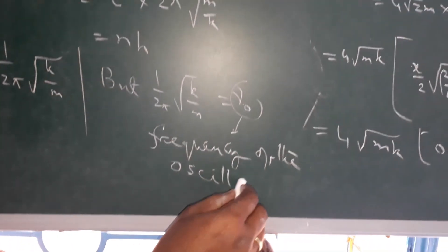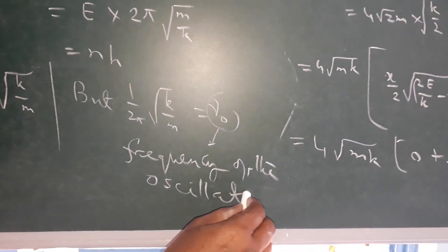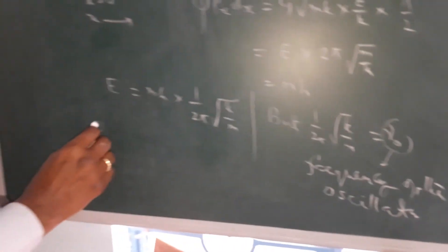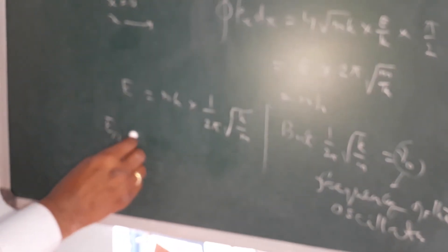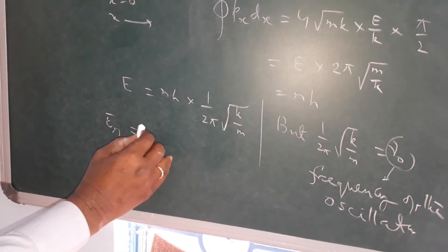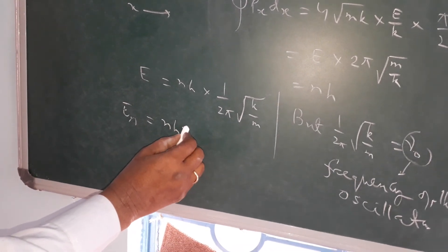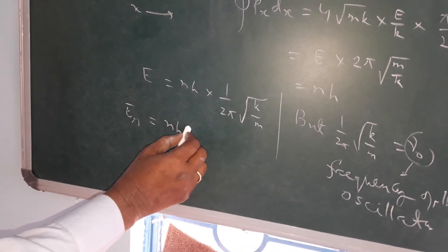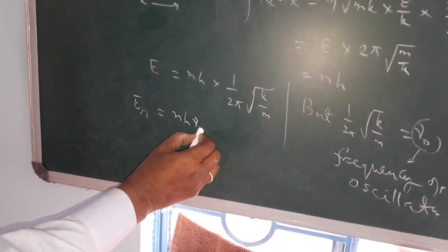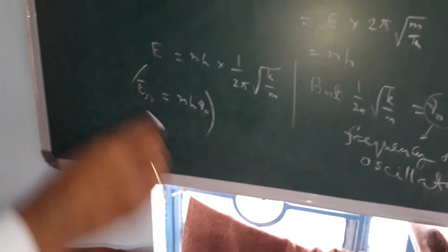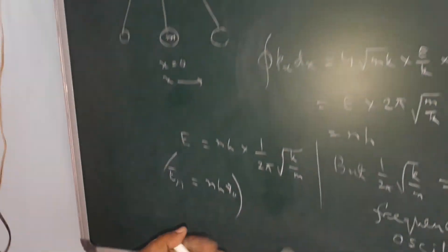So the energy for the nth level is Eₙ = nhν₀. The energy is quantized by this direct integration method, where n = 0, 1, 2, 3, etc.